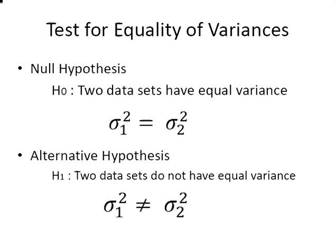Let's be clear about what the null and alternative hypotheses are. The null hypothesis is that the two data sets have equal variance, sigma1 squared equals sigma2 squared. The alternative is that they do not have equal variance, so sigma1 squared is not equal to sigma2 squared.